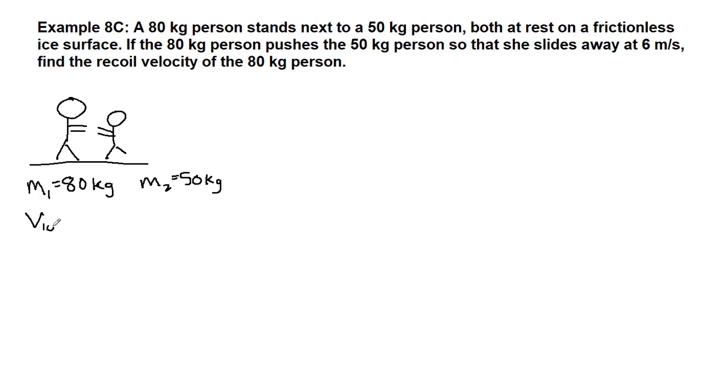If they are both at rest, then we have information about their initial velocity. In this case, they are both zero. So this information, picture, and four listed given information values comes from the very first sentence.